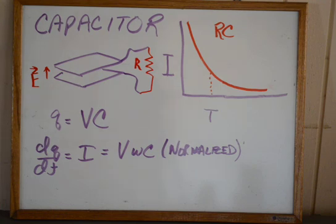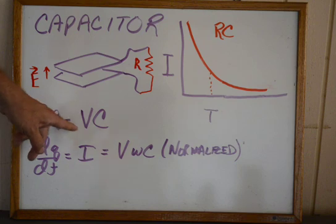Now in a capacitor we have a thing called charge. I'm going to use lower q for charge, and that's equal to the voltage times the capacitance.